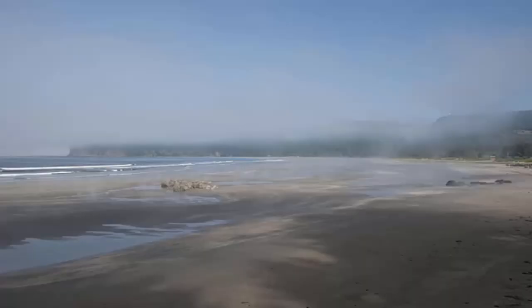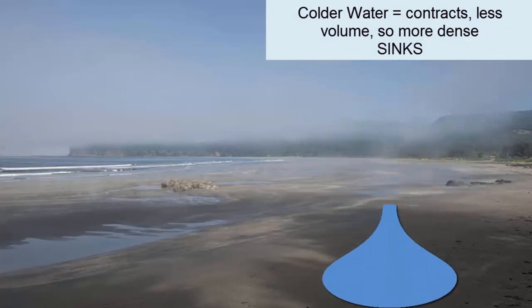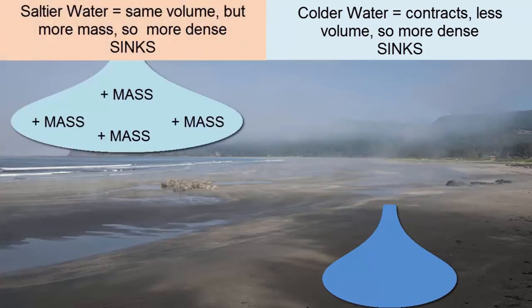Where do we see objects rising and sinking on our planet as density changes? In the oceans, when water cools, it contracts, becomes smaller in volume, and thus denser, and sinks. If water becomes saltier, it adds mass without changing its volume. It becomes denser and sinks.